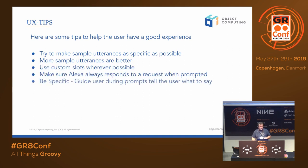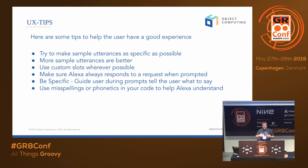A couple of tips: make sure your sample utterances are as specific as possible — the more sample utterances, the better it understands. Use custom slots wherever possible if there isn't a slot type already for something you're trying to parameterize. Always make sure Alexa responds to requests when prompted — if you send back blank on that intent, they'll immediately reject you. Guide users during prompts — tell them what to say and have a way to repeat if they couldn't understand. Use misspellings and phonetics in your sample utterances — that will help Alexa understand people with different accents and inflections.